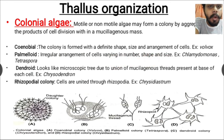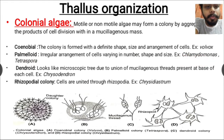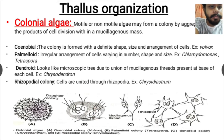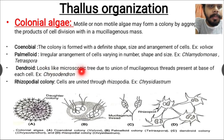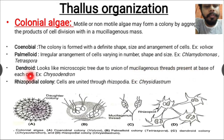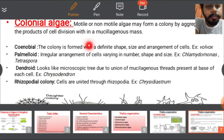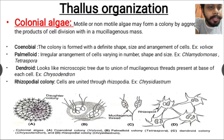The next colonial type is palmeloid, which has an irregular arrangement of cells varying in number, shape, and size — the opposite of coenobial. Examples are Chlamydomonas and Tetraspora. Here we can see the Tetraspora colony with its irregular and varying number, shape, and size. Next is dendroid colony, which looks like a microscopic tree due to the union of mucilaginous stalks present at the base of each cell — example: Chrysodendron.